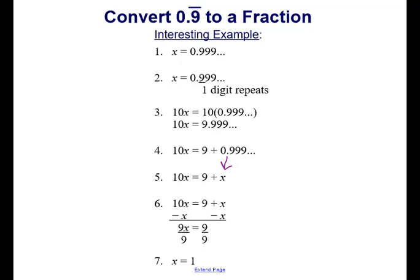Then if we want to solve for x, we'll subtract x from both sides. That gives us 9x equals 9. Dividing by 9 on both sides gives us x equals 1.